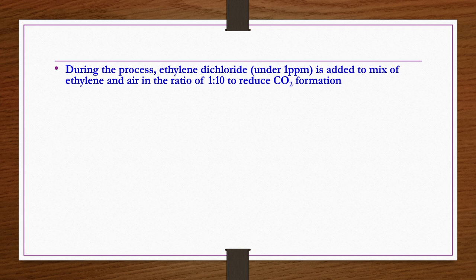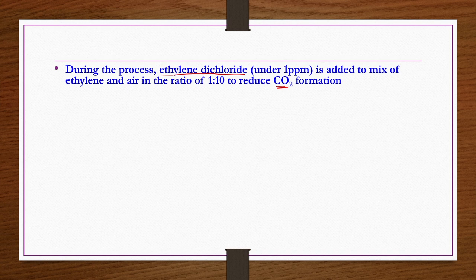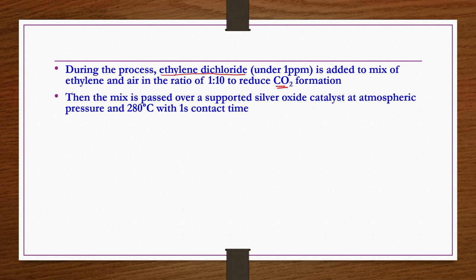During ethylene oxide production, traces of ethylene dichloride (EDC) are added to the ethylene-air mixture in a ratio of 1:10 to reduce CO2 formation. Excess CO2 acts as an inert, occupying reactor space and reducing efficiency. The mixture passes over supported silver oxide catalyst at atmospheric pressure and 280°C with about 1 second contact time, giving 60 to 70 percent conversion of ethylene to ethylene oxide.